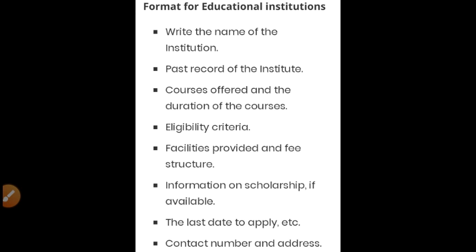The format for educational institutions — suppose any institution like Amrapali Institute, Graphic Era, or any school wants to advertise for specific courses like BBA, MBA, or MCA. The ad should include: the name of the institution, pass and placement record, courses offered and their duration, eligibility criteria (for example, class 12th pass for BBA, or graduate for MBA or MCA), facilities provided, fee structure, information on scholarships if available, last day to apply, and at last contact number and address.